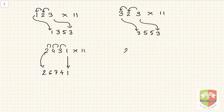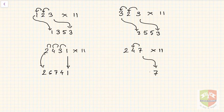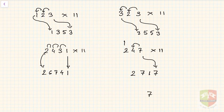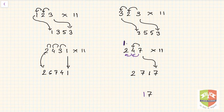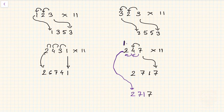Now a more complex example with carry-overs: 247 into 11. Start with 7. Then 7 plus 4 is 11, so write 1 and carry 1. Then 4 plus 2 is 6, plus carry 1 is 7. Finally bring down 2. The answer is 2717. You can verify by dividing 2717 by 11 to get 247.